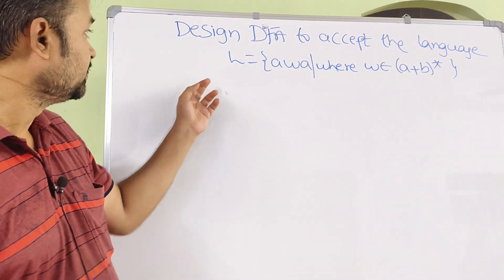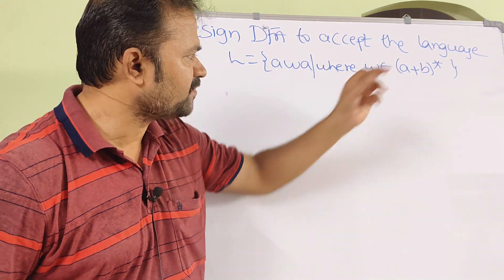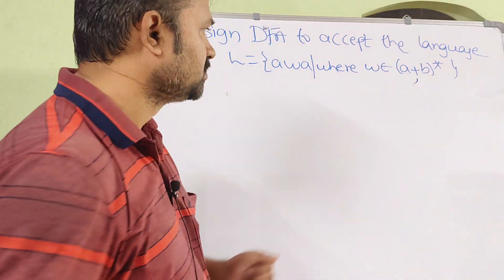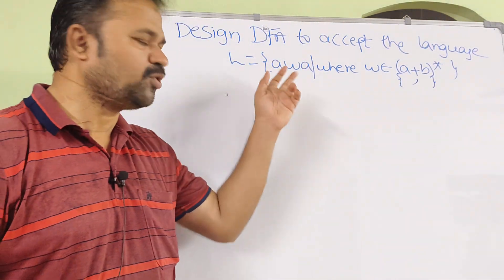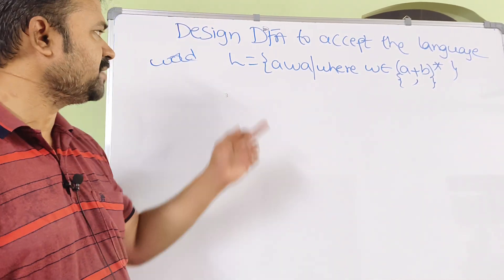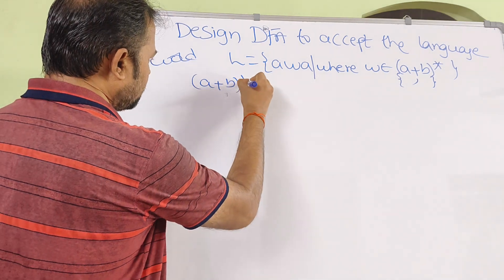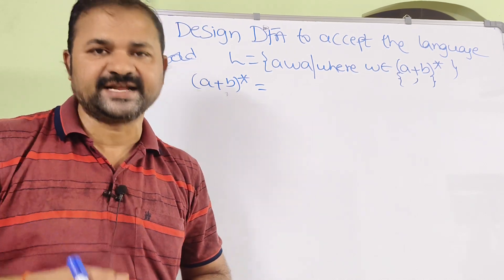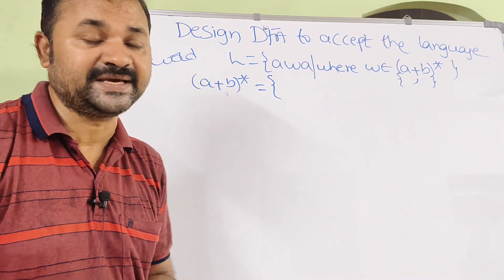Now let us solve this problem. Design a DFA to accept the language L = AWA, where W belongs to (A+B)*. The plus or comma means union operation, and parentheses or curly braces may be used. W means word, which is nothing but a string. Here W is a combination of (A+B)*, where star means zero or more occurrences. So zero occurrences of A or B gives us epsilon.